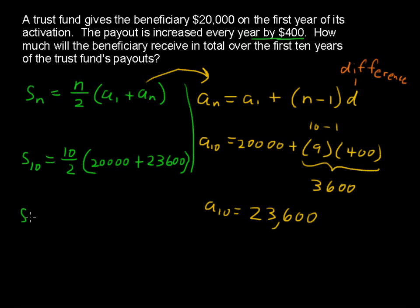S sub 10, then, becomes 10 divided by 2. Five times the sum of those two numbers comes to $218,000.